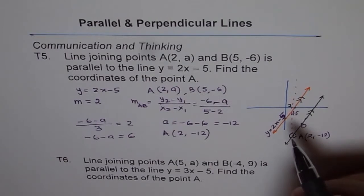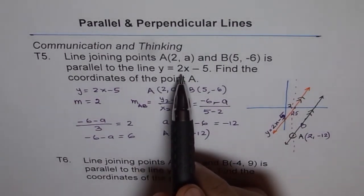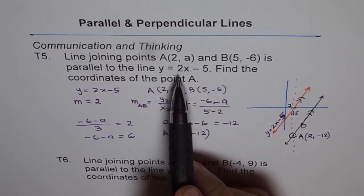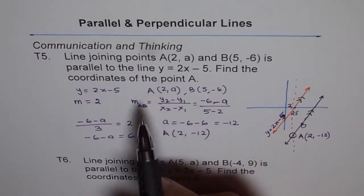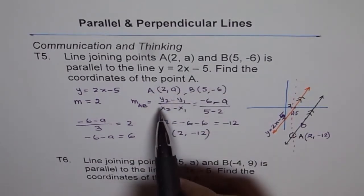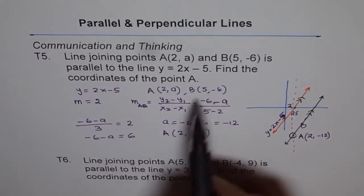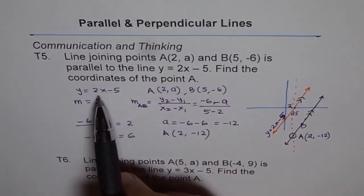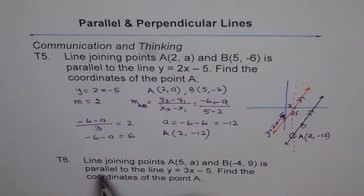Let's review the steps. Step 1: find the slope of the given line — here it was 2. Since line AB is parallel to the given line, slope of AB must also be 2. Step 2: write slope of AB as (y2 - y1)/(x2 - x1) and equate it to 2. Step 3: solve the equation to find a, which gave us a = -12.